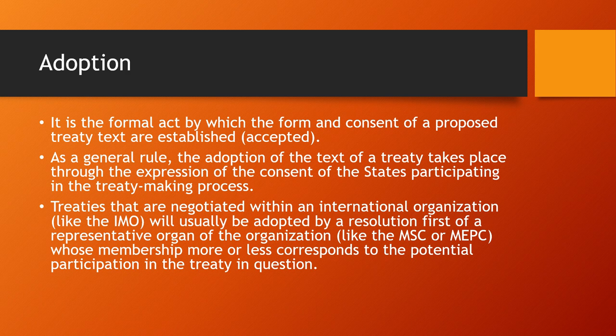Then we have the process of adoption. Adoption is a formal act by which the form and content of a proposed treaty are established. You may have heard that a certain convention was adopted and then formally ratified. As a general rule, the adoption of the text of a treaty takes place through the expression of consent of the states participating in the treaty-making process. Treaties negotiated within an international organization like the IMO will usually be adopted by a resolution first.